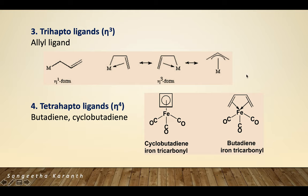Trihaptoligands (η3) have three carbon atoms associated with the metal. The allyl ligand coordinated in η3 fashion has all three carbon atoms involved in coordination. Note that allyl can also coordinate in η1 form, where only the terminal carbon bonds to the metal, but in η3, all three carbons are bonded.